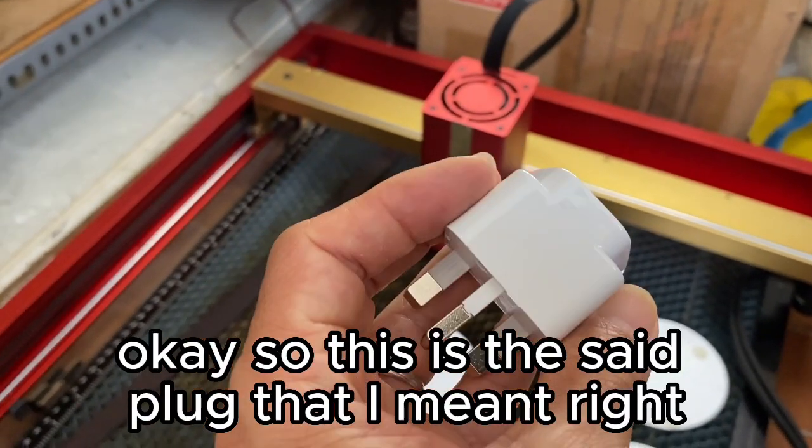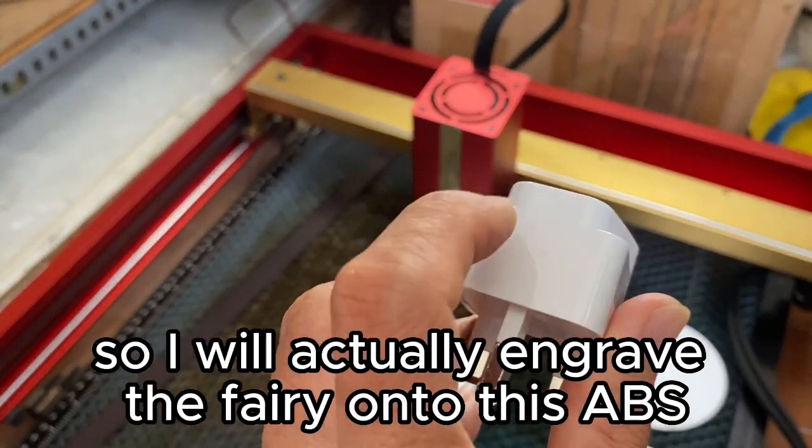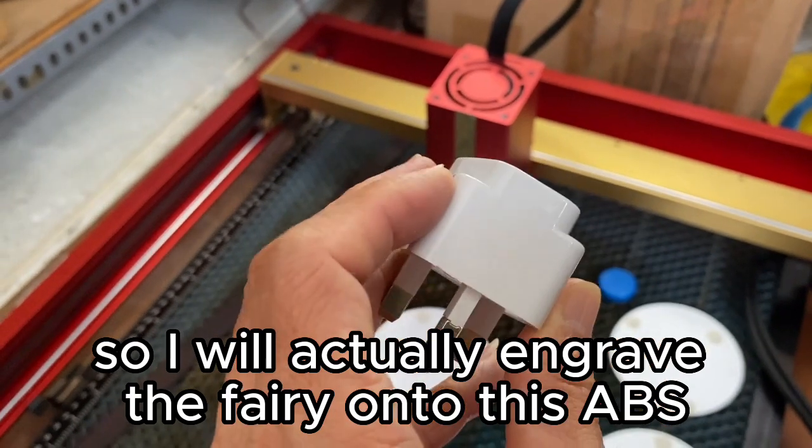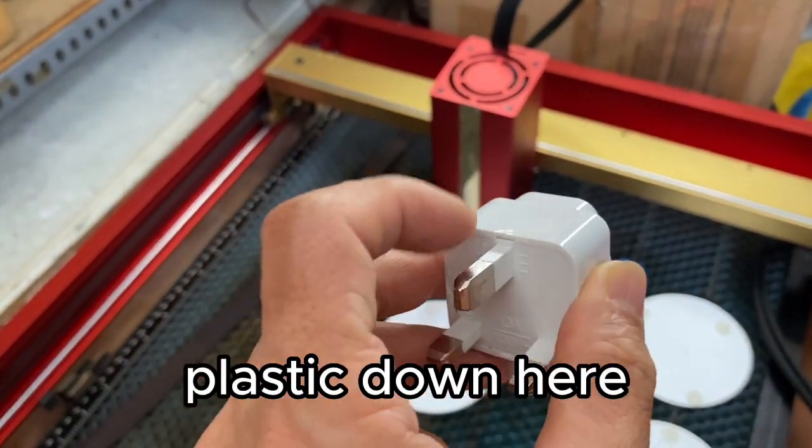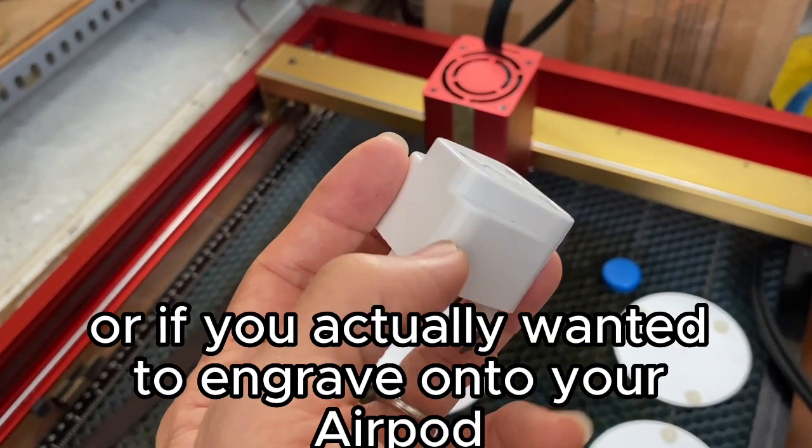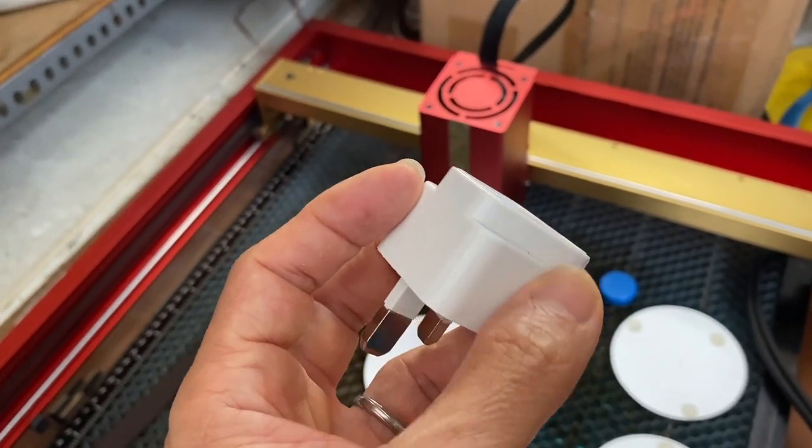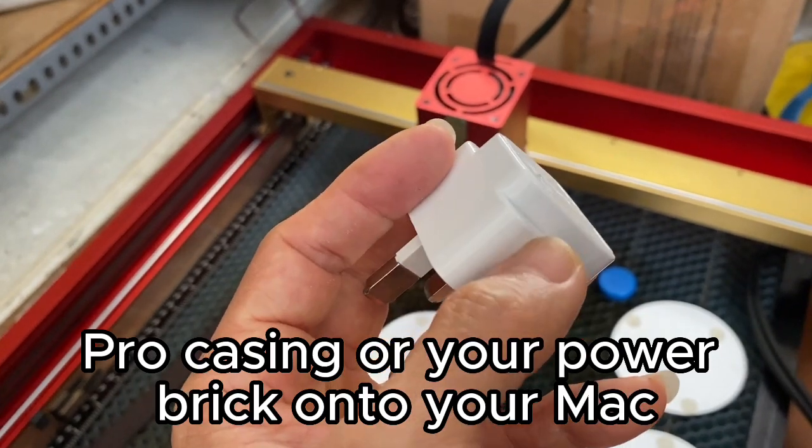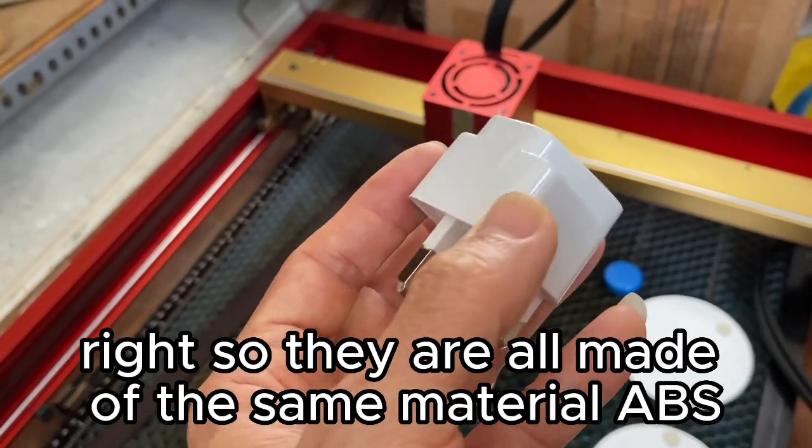Okay, so this is the seat plug that I meant. I will actually engrave the fairy onto this ABS plastic down here. It's very similar to the material if you actually wanted to engrave onto your AirPod Pro casing or your power brick onto your Mac—they are all made of the same material, ABS.